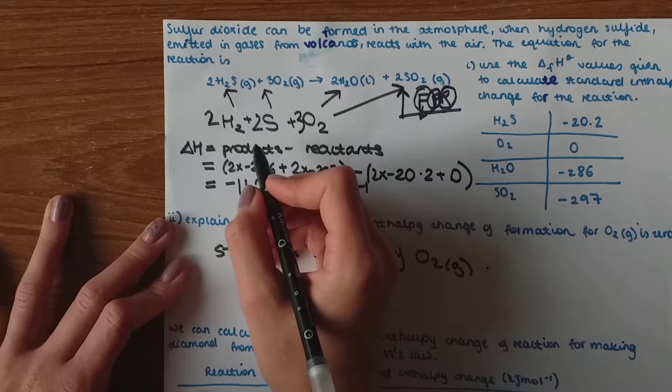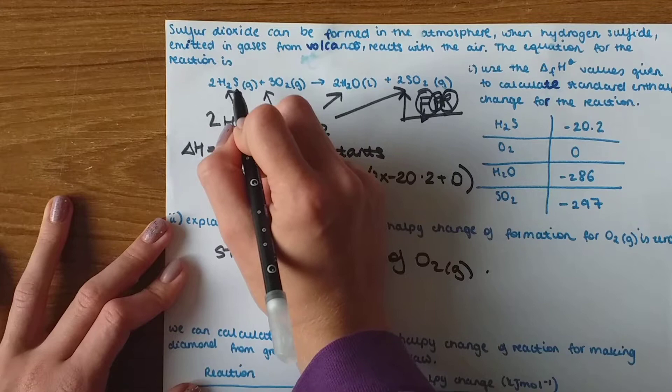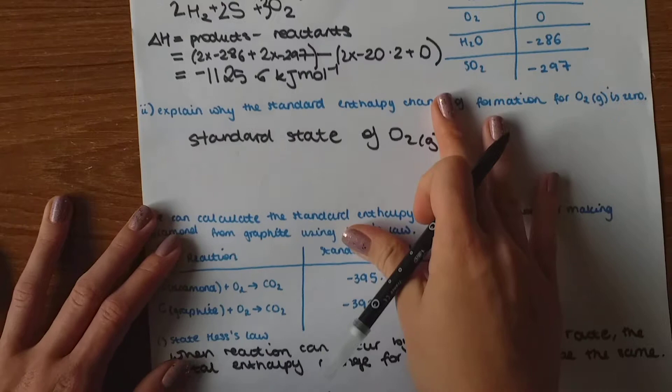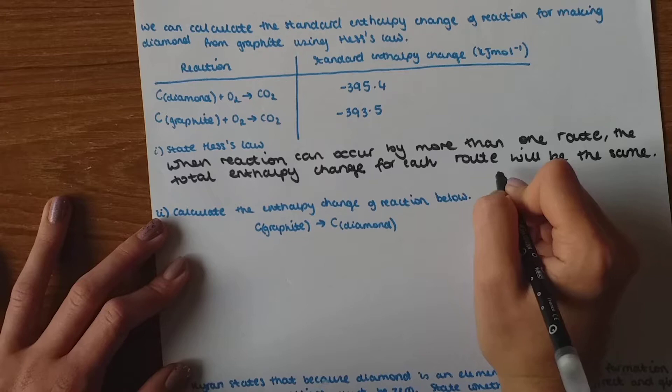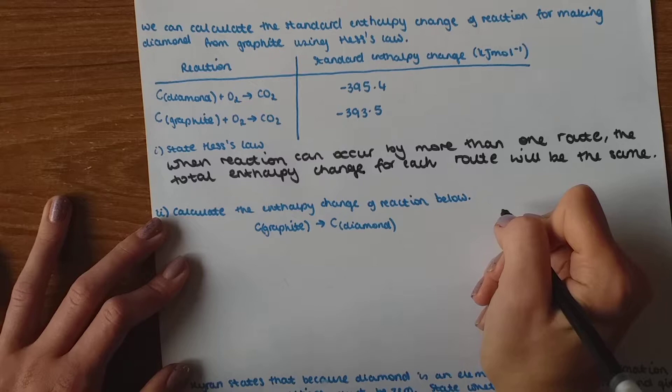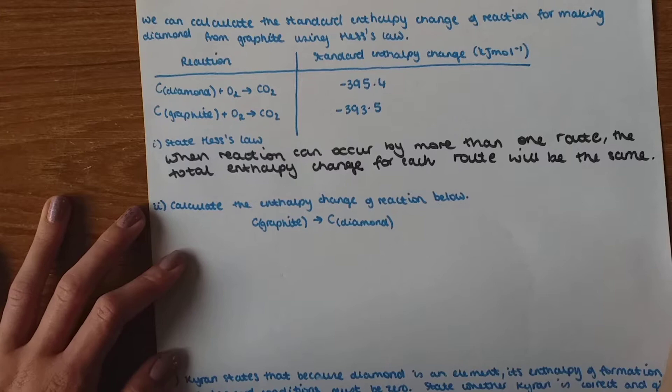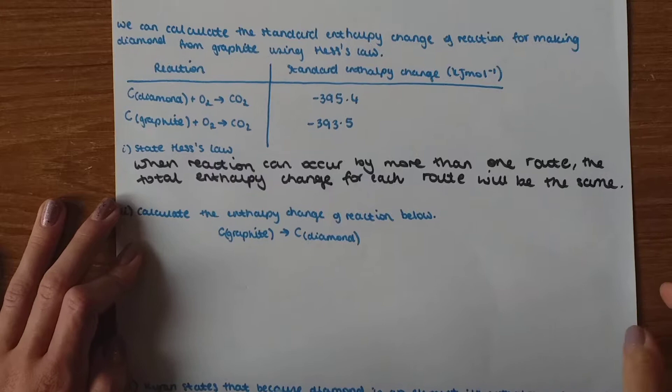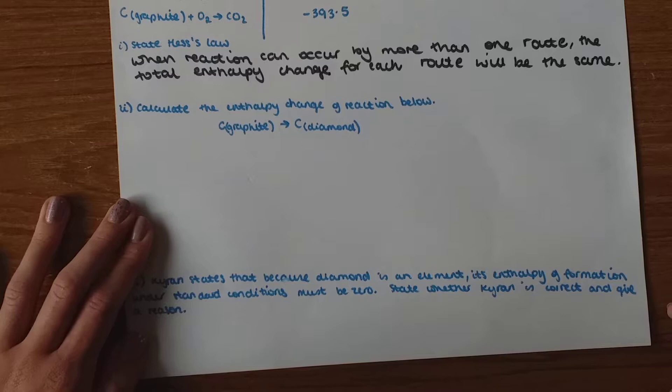So obviously these reactants don't go directly into these products. And for Hess's law the reaction can have more than one route so it doesn't always go like in a straight line from reactants to products. It may go to a different reaction to intermediate and then to the products but it doesn't matter which route it will take, it always has the same total entropy change. If you're still not sure what this means please visit my blog and the Hess's law tutorial to catch up.